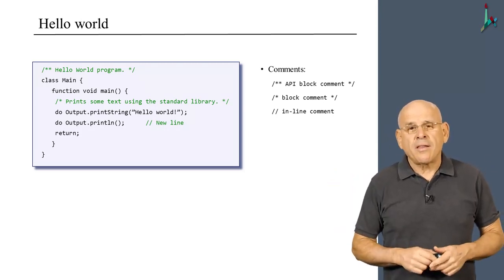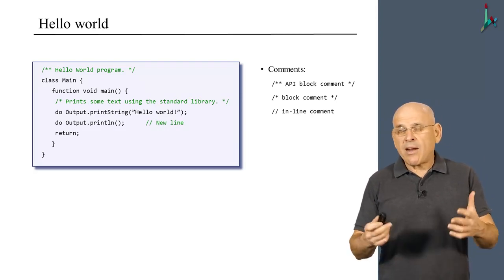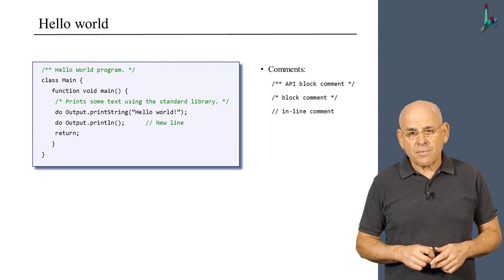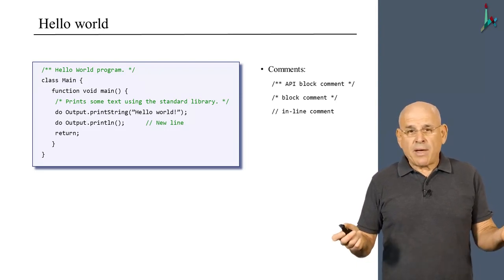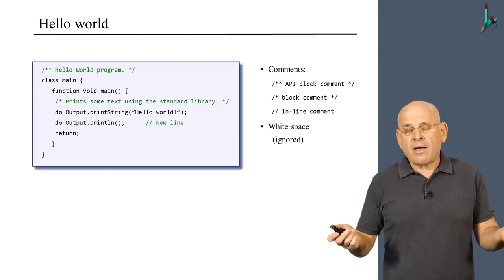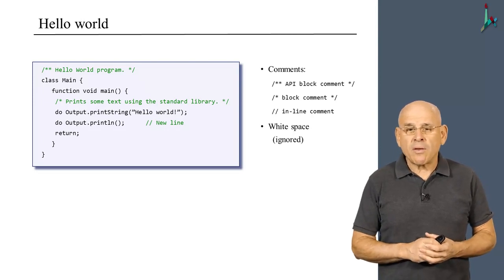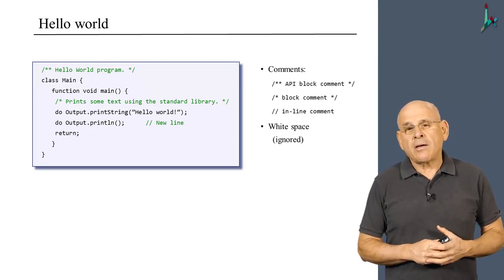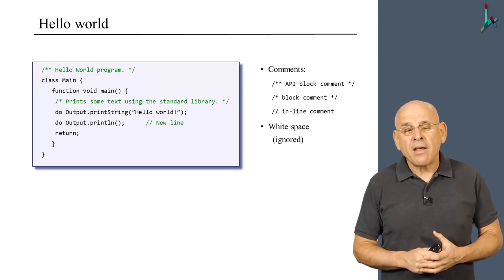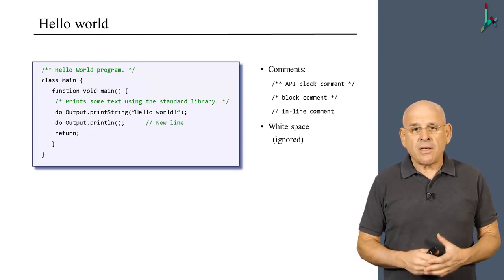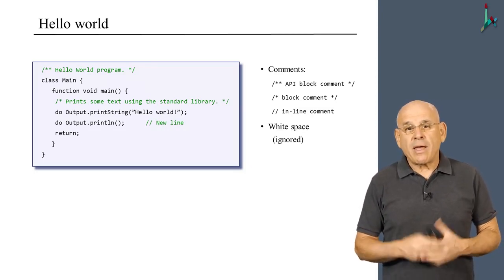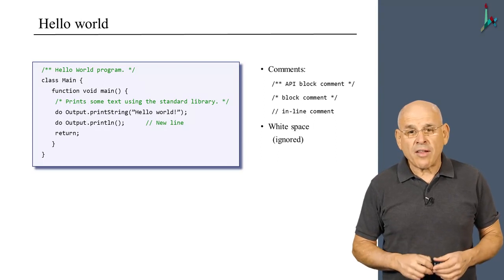And we have inline comments, which are used for internal documentation. In addition, we have white space. We can use as many space characters as we want in our code. And we exploit this white space and the fact that it's ignored by the compiler in order to use indentation. And indentation, of course, is super important in order to help us make sense of our code and the code of other programmers.